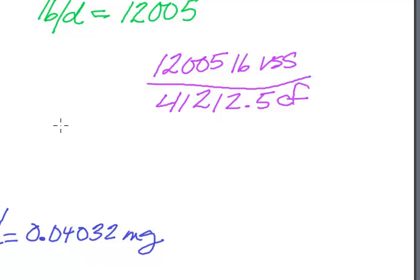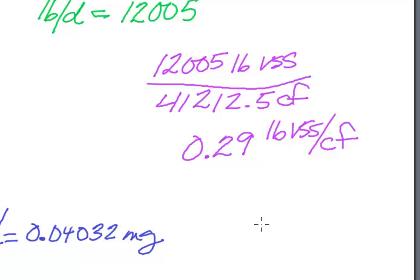So put that in the calculator, 41,212.5, and those two are getting divided. And my answer here is 0.29 pounds of volatile suspended solids per cubic foot of digester. And that's actually a pretty reasonable number.